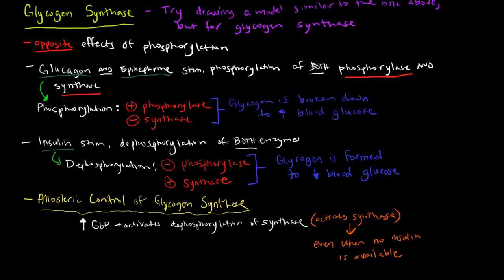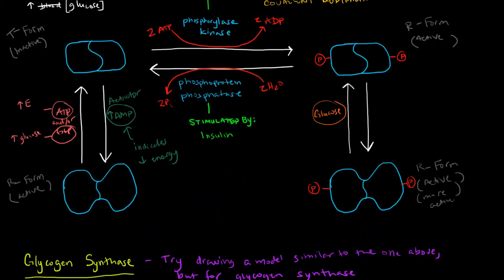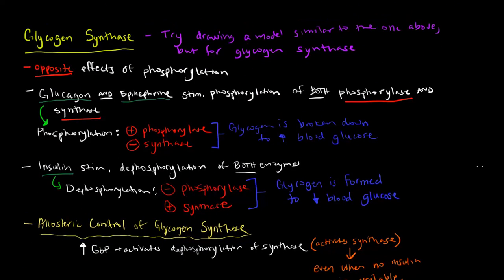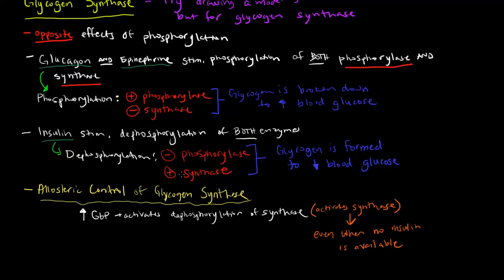Insulin stimulates the dephosphorylation of both enzymes. When the phosphorylase is dephosphorylated, it's in its T form — its inactive form. Whereas dephosphorylation of the synthase actually activates it. So we have the synthase active and the phosphorylase inactive — glycogen is formed to decrease blood glucose levels, which makes sense because insulin is supposed to decrease blood glucose levels. As far as allosteric control of glycogen synthase goes, a high amount of G6P will activate the dephosphorylation of the synthase, activating it even without insulin around.